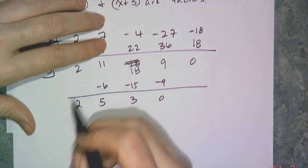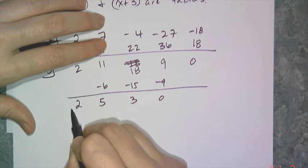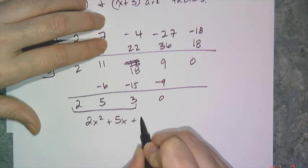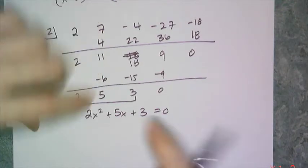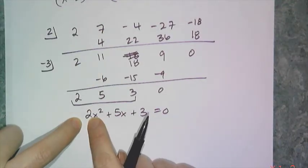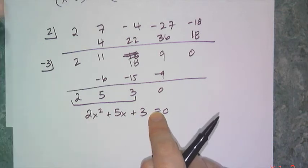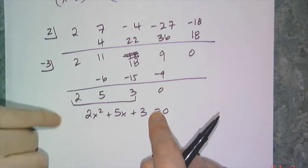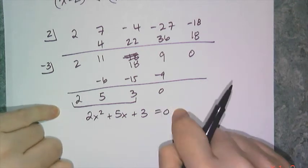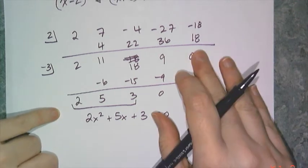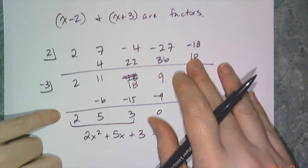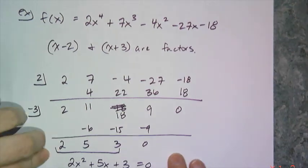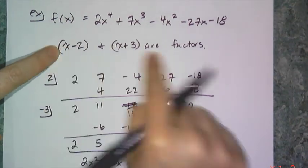Now I deal with what's left over: 2x squared plus 5x plus 3 equals 0. That's a quadratic I can solve using completing the square, the quadratic formula, or factoring, and I can find the other two factors. I just need these initial factors — the factor theorem lets me create these easier equations to solve.